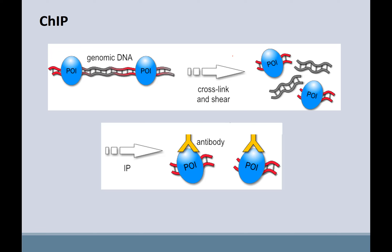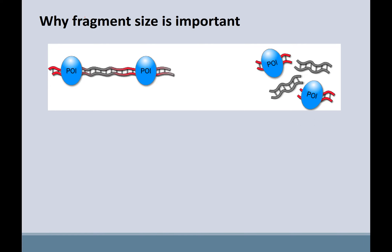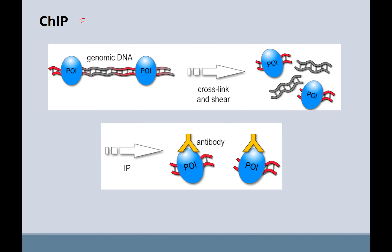The method they're using to detect protein-DNA interaction is called ChIP, which stands for Chromatin Immuno Precipitation. It is always spelled capital C, lowercase h, capital I, capital P — please, when you type it, type it correctly.